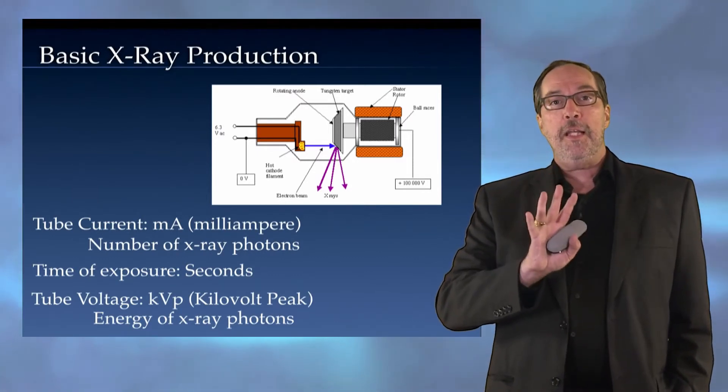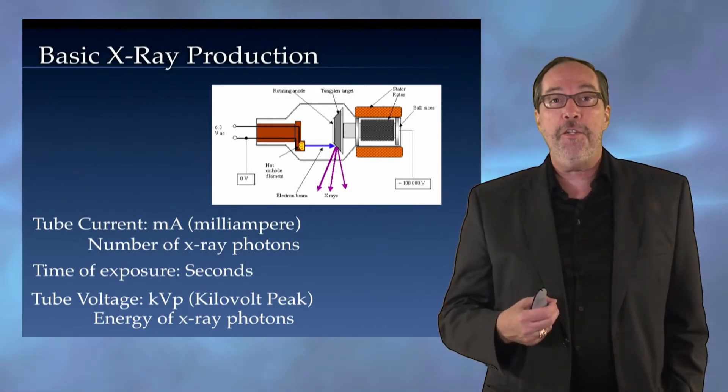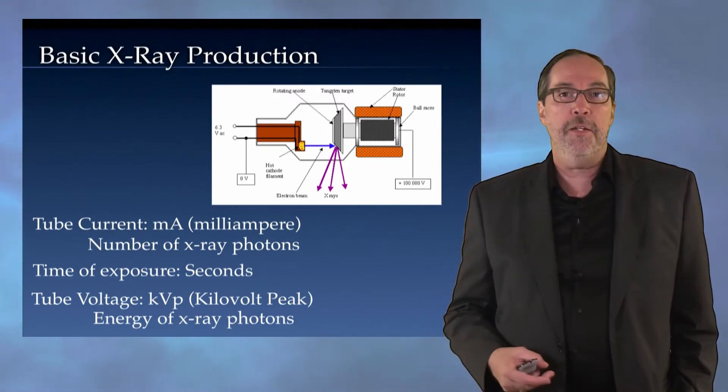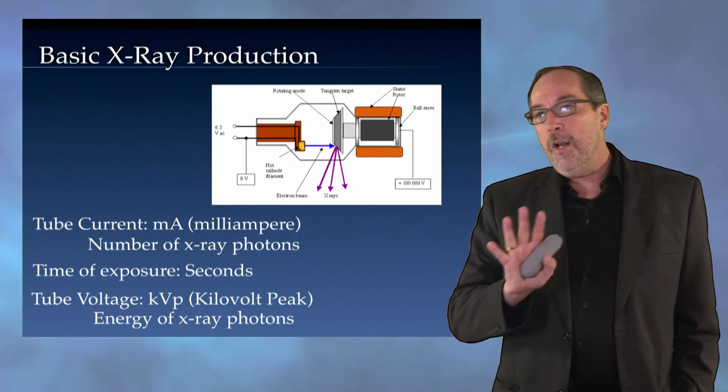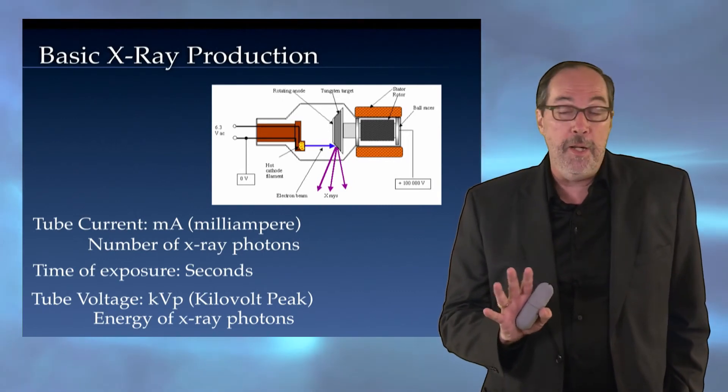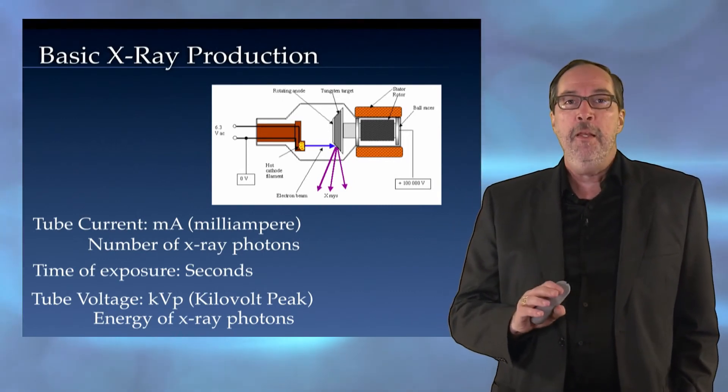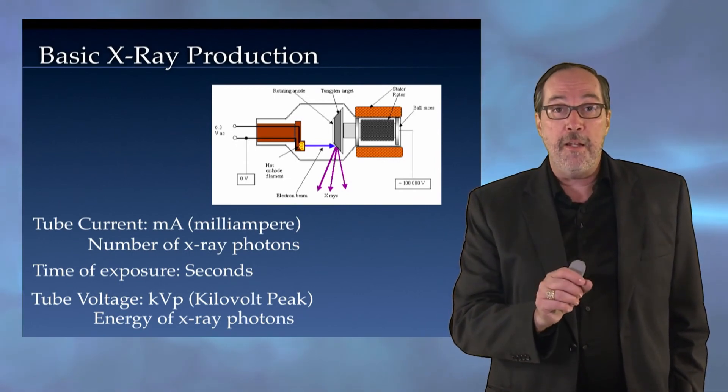The higher the KVP, the greater the energy of these photons we're producing from the X-ray tube. It's important to remember that all of these parameters—the tube current in milliamperes, the exposure time in seconds—and sometimes those are reported together as mAs.